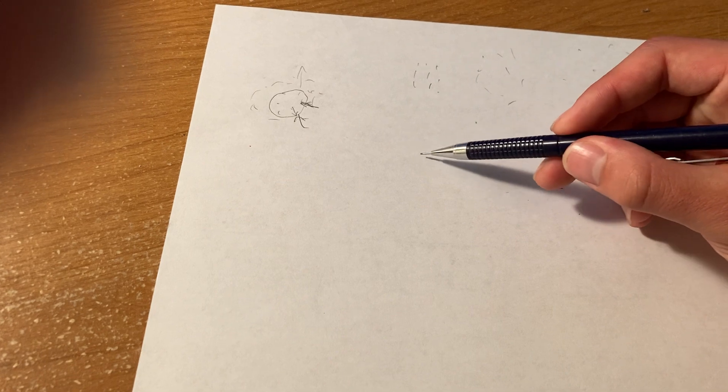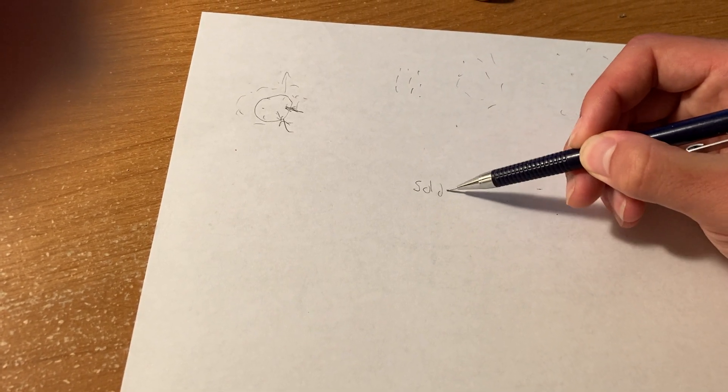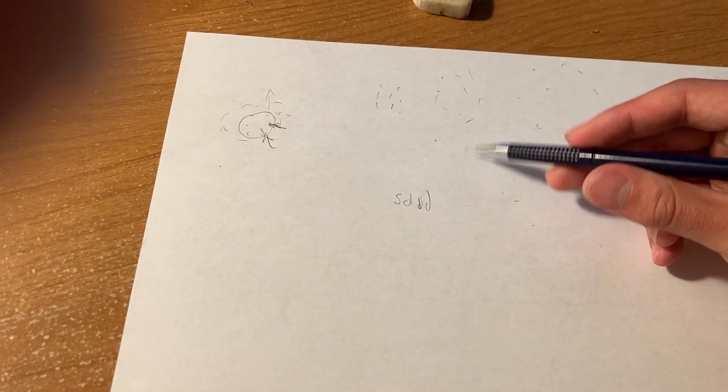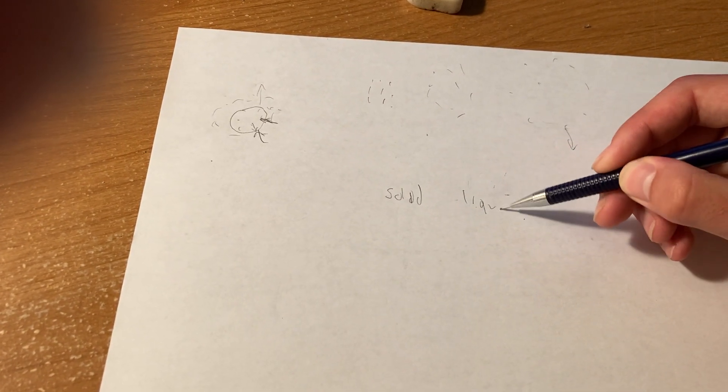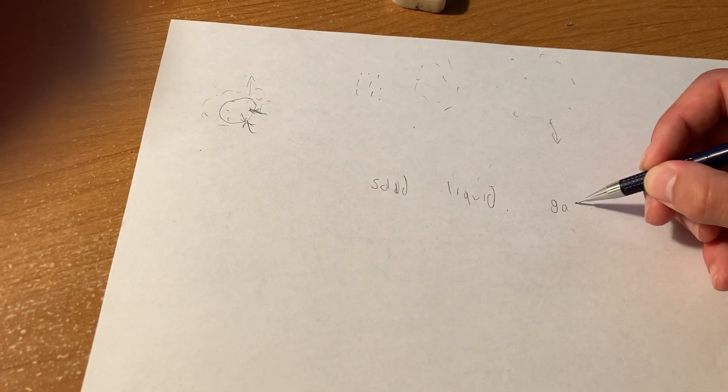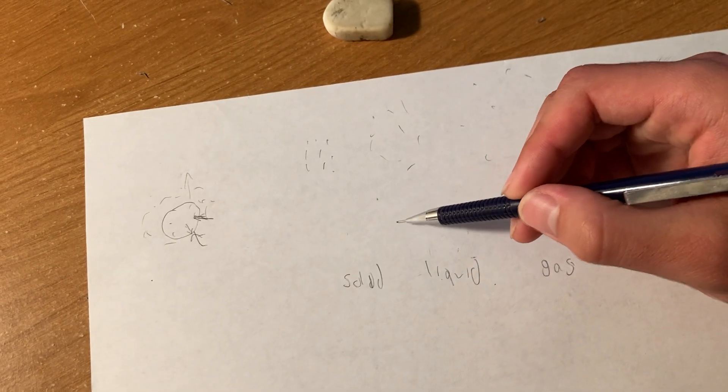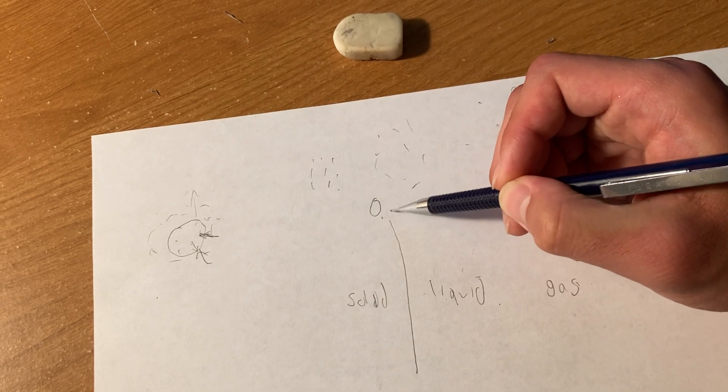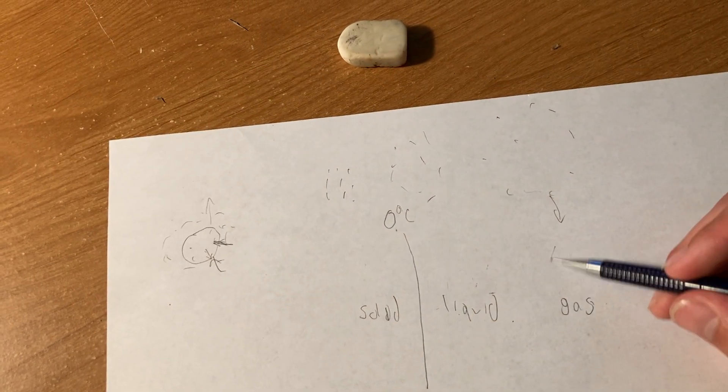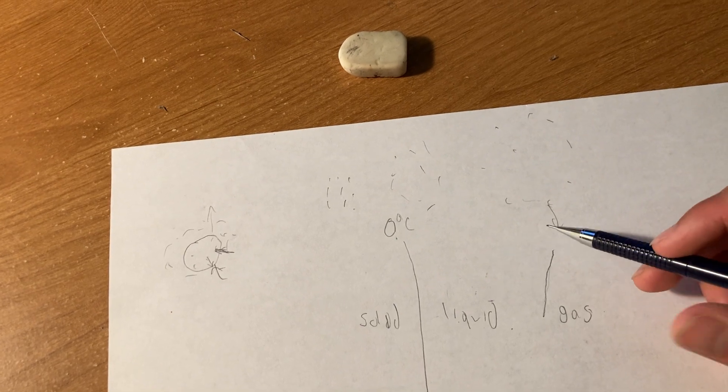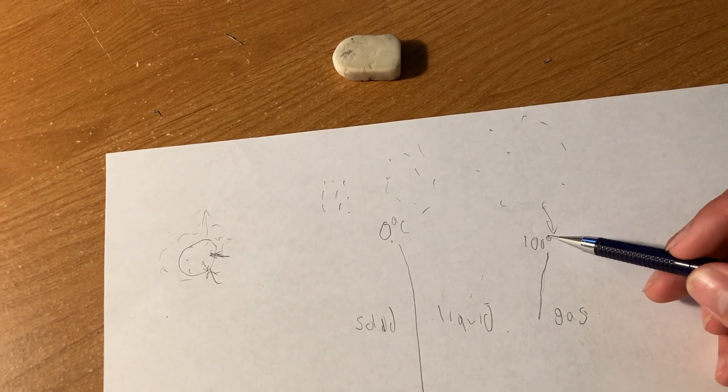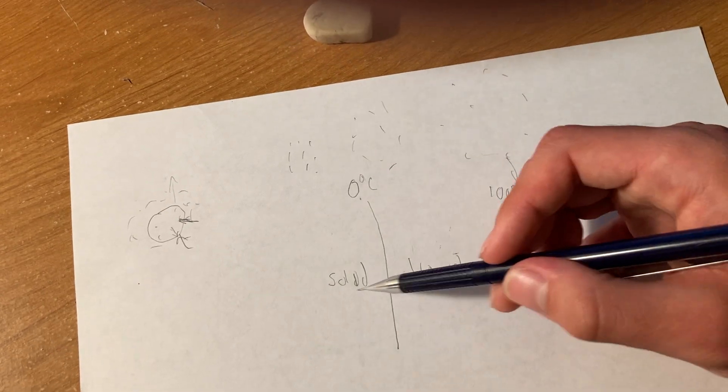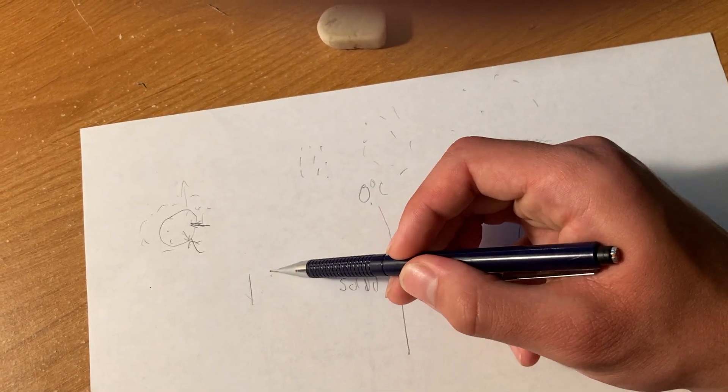Well, if you look at this, you have solid, liquid, and gas. Water goes from solid to liquid at zero degrees Celsius, and it also goes from liquid to gas at 100 degrees Celsius, but this is true at atmospheric pressure.